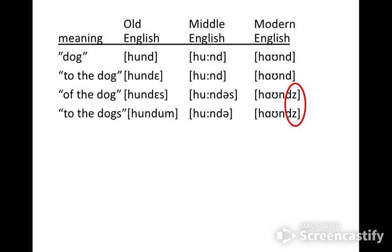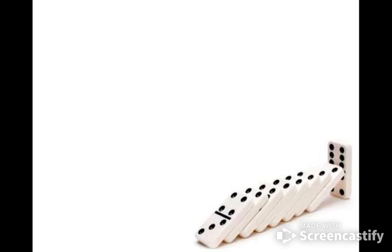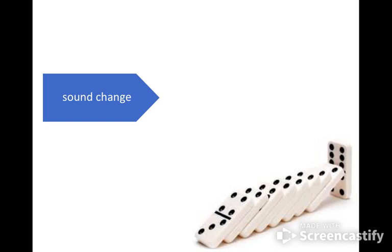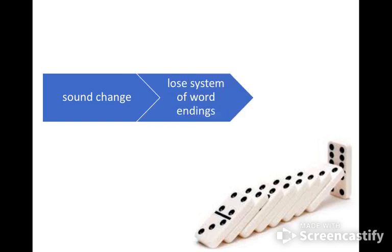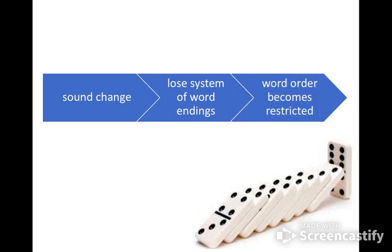Once this happens, word endings just aren't really there anymore. That means that this change in the sound system — some of those vowels changing — leads to a change in the structure of words: the word endings aren't there anymore. And that leads to, among other factors that contributed to this, word order becoming more restricted. So everything's related to everything else in a language system, and this is how word order became more restricted in the history of English.